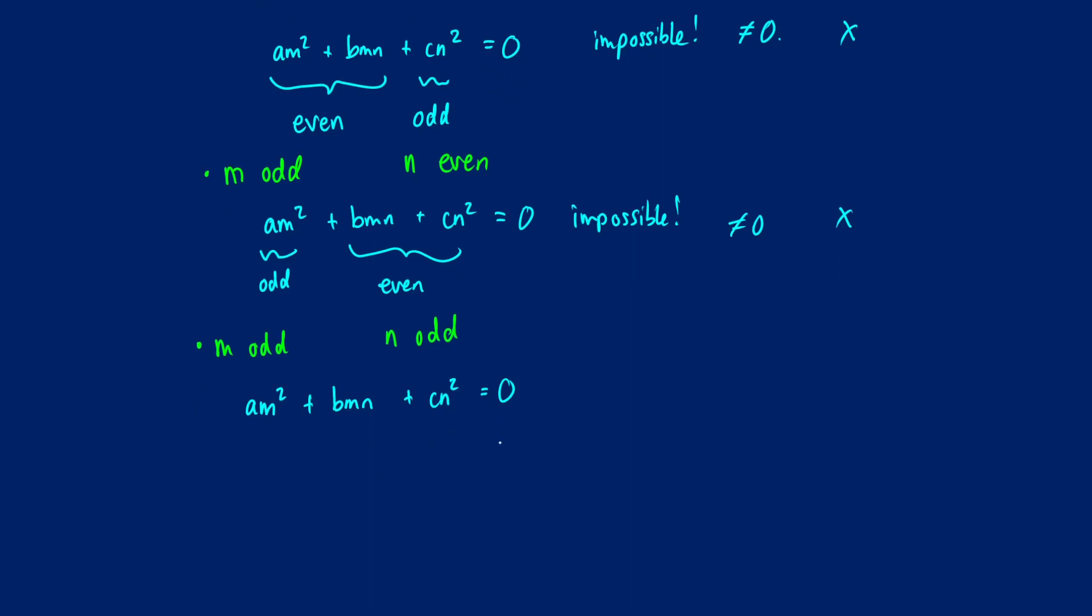Well, first of all, m is odd, so m squared is going to be odd. So anything times an odd number is going to be odd. Now for b times m times n, we have two odd numbers being multiplied by something else. So an odd times an odd, 7 times 3, what do you get? You get an odd number back.